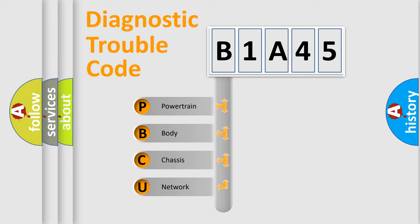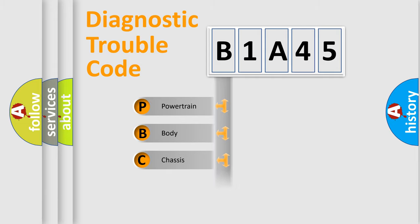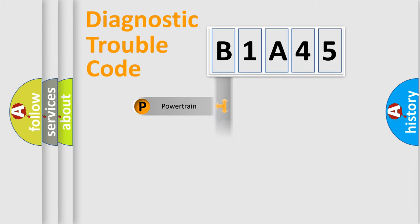We divide the electric system of an automobile into four basic units: Powertrain, Body, Chassis, and Network.